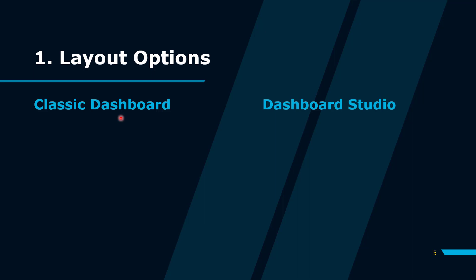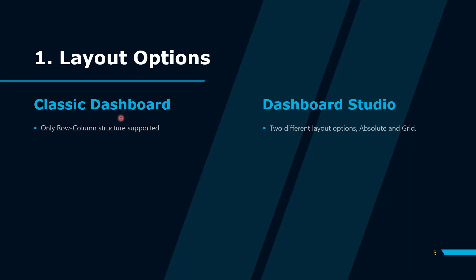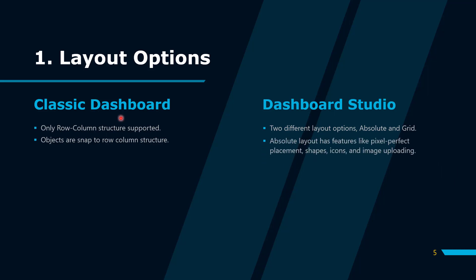The first thing is the layout option, which I think is an amazing one. In the classic dashboard we only have the row-column structure — we create rows, and inside the rows we create panels in a column structure. In the Dashboard Studio there are two options: one is called absolute layout and the other is called grid layout.